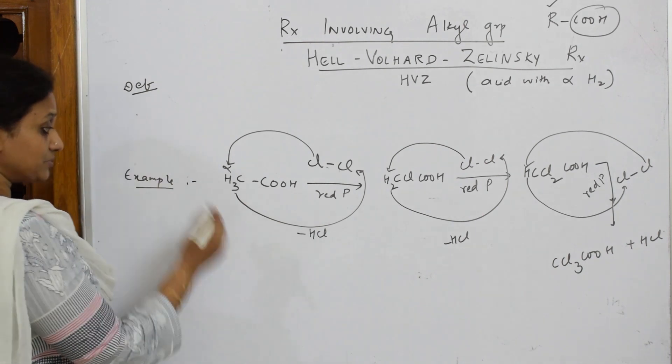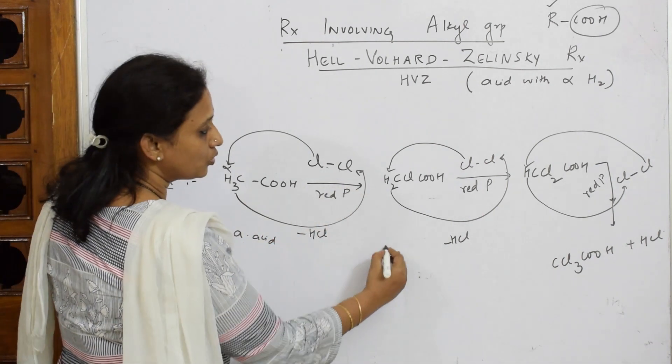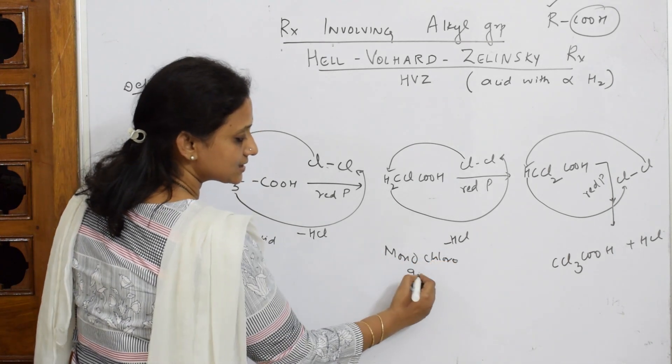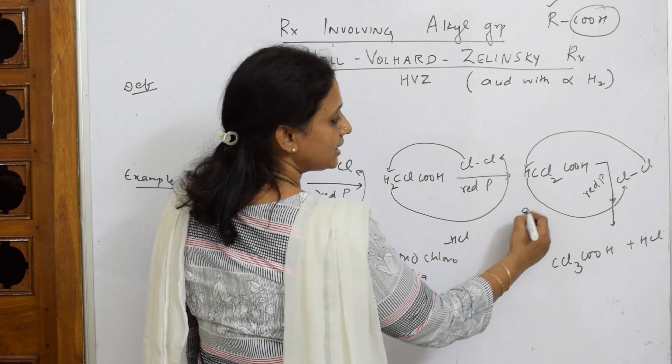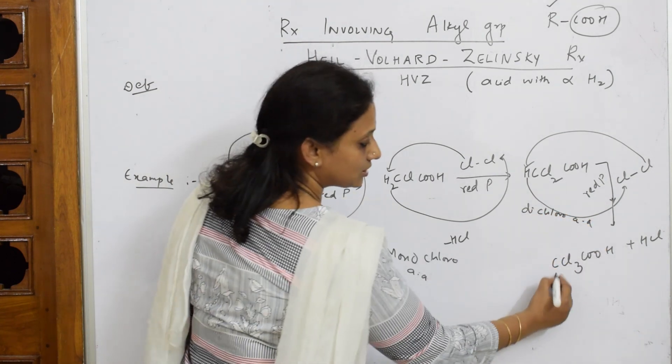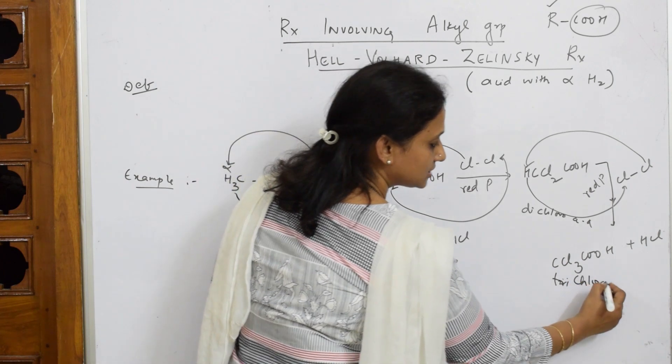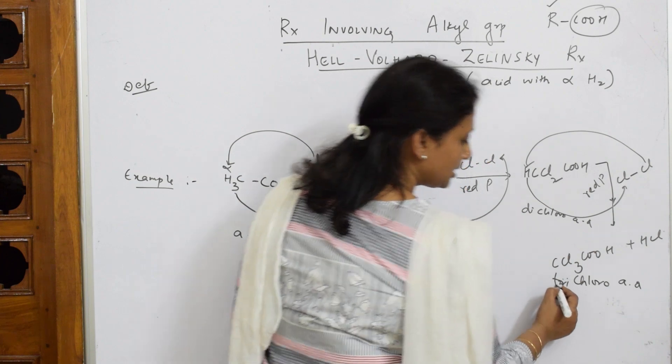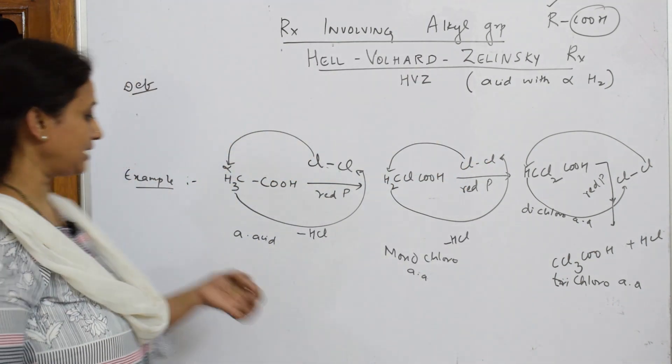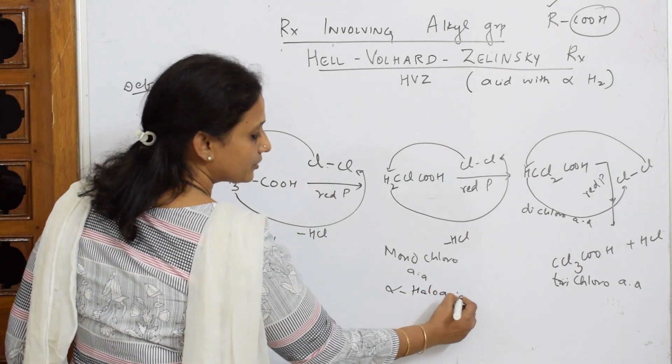Now try to label this, your HVZ reaction. Try to write the names. This is your acetic acid, this is monochloroacetic acid, this is your dichloroacetic acid, this is your trichloroacetic acid. That's it, this is your reaction. These are also called as alpha halo acids.